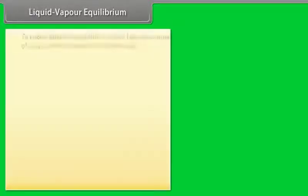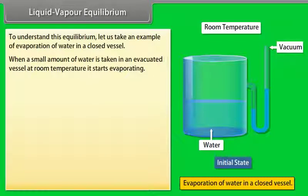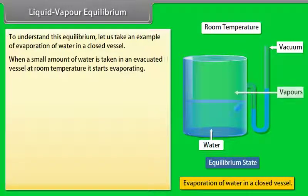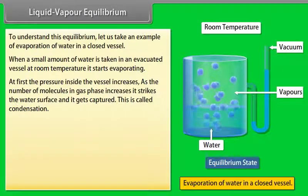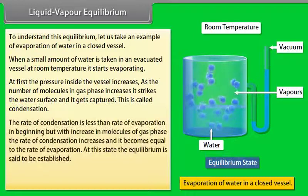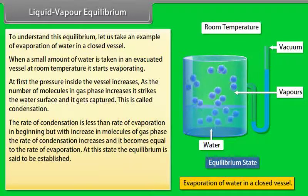Liquid-Vapour Equilibrium: Consider the evaporation of water in a closed vessel. When a small amount of water is taken in an evacuated vessel at room temperature, it starts evaporating and the pressure inside increases. As the number of molecules in the gas phase increases, they strike the water surface and get captured — this is called condensation. Initially, the rate of condensation is less than the rate of evaporation, but with more gas-phase molecules, the rate of condensation increases.